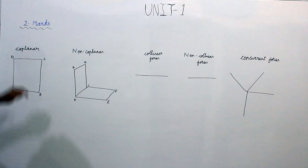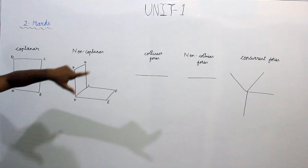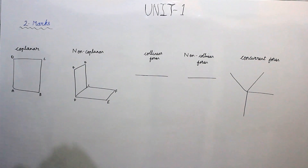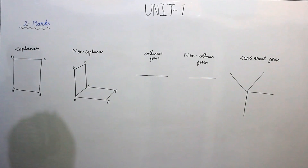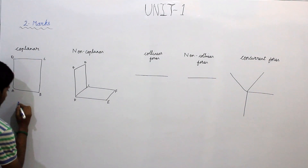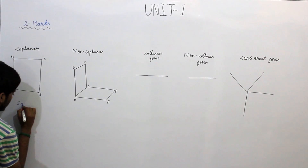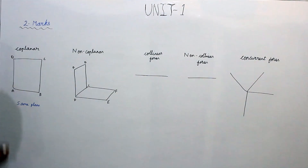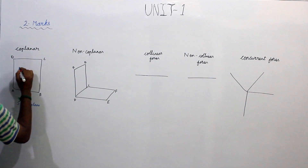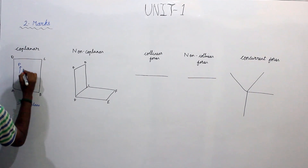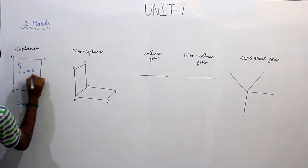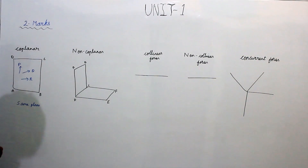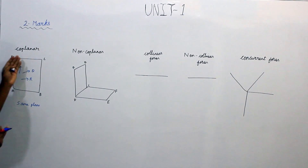Next we will look at coplanar, collinear, and angular forces. Coplanar forces are those which act in the same plane or a single plane. For example, in one plane, forces P, Q, and R act. When all forces act in the same plane, they are called coplanar forces.